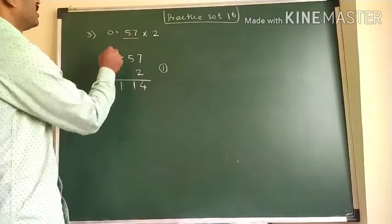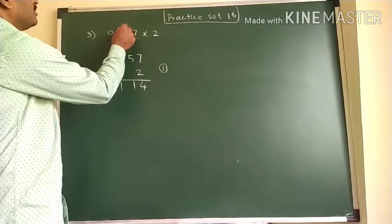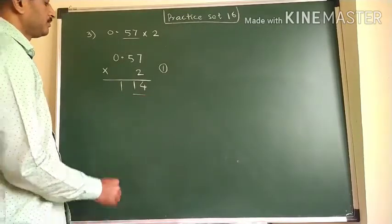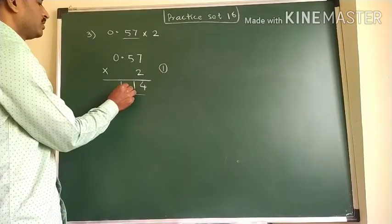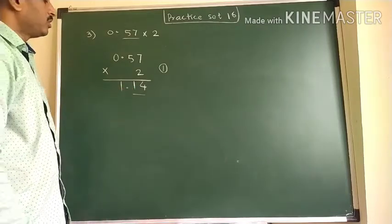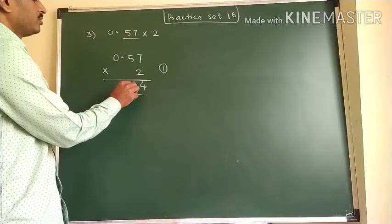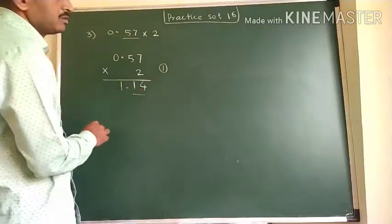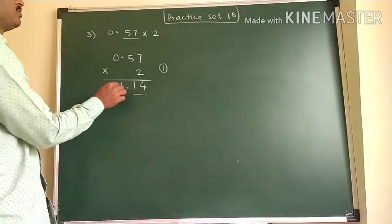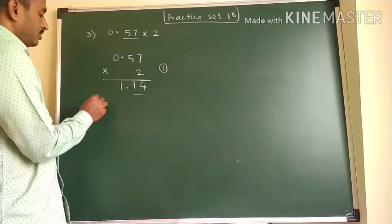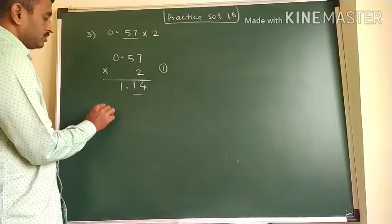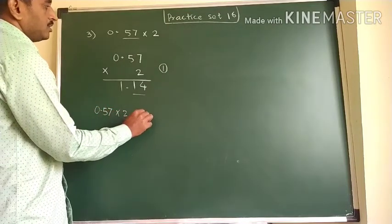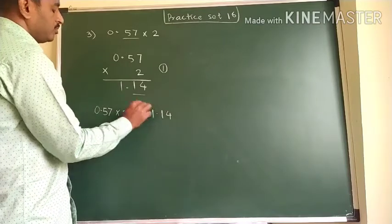In the question, 2 decimal places are there after the decimal point. So in the answer also we have to leave 2 decimal places after the decimal point. We put the decimal point before this one, so 2 decimal places come after the decimal point. Therefore, 0.57 × 2 = 1.14.